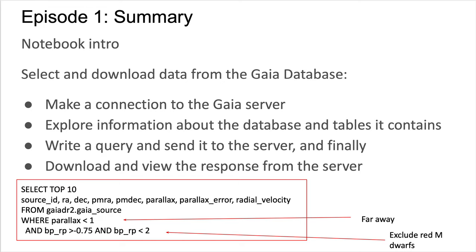Episode one itself begins with a summary of how to navigate a Jupyter notebook. It then moves on to develop the skills to select and download data from the Gaia database, by first making a connection to the Gaia server and exploring the database and tables, then writing a query and sending it to the server. Finally, the results are downloaded and the server's response viewed.